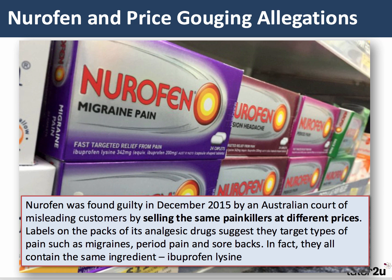Here's an example of where monopoly pricing can have a damaging effect on social welfare. It's quite a well-known case: Nurofen in Australia was found guilty and fined quite heavily by an Australian court for breaching competition policy, for trying to sell essentially the same painkillers at very different prices. They labelled packs — with exactly the same ingredient — as being specifically for migraine pain, tension headache, period pain, or sore back, and charged different prices for what was exactly the same product. You could argue this is a rather unethical use of monopoly power in the market.